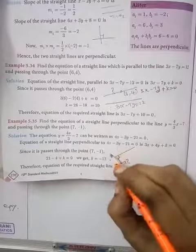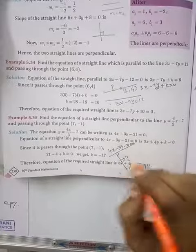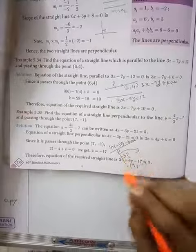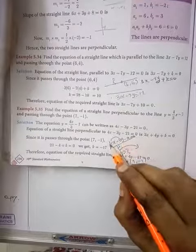The given equation when simplified, I will get 4x minus 3y minus 21 equal to 0. To write it in that form, interchange the coefficient of x and y. Then 3 will come here, 4 will come here.